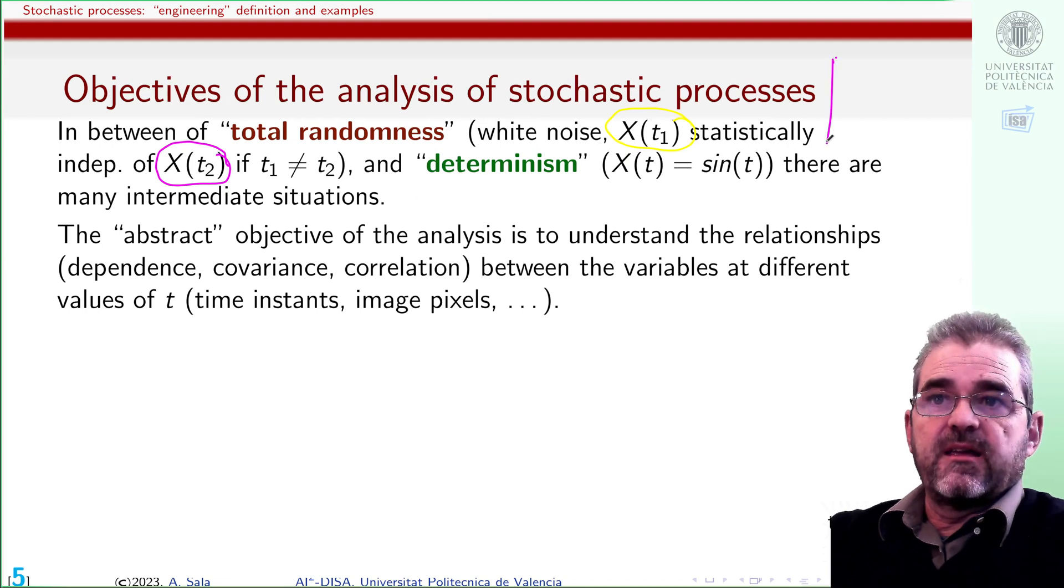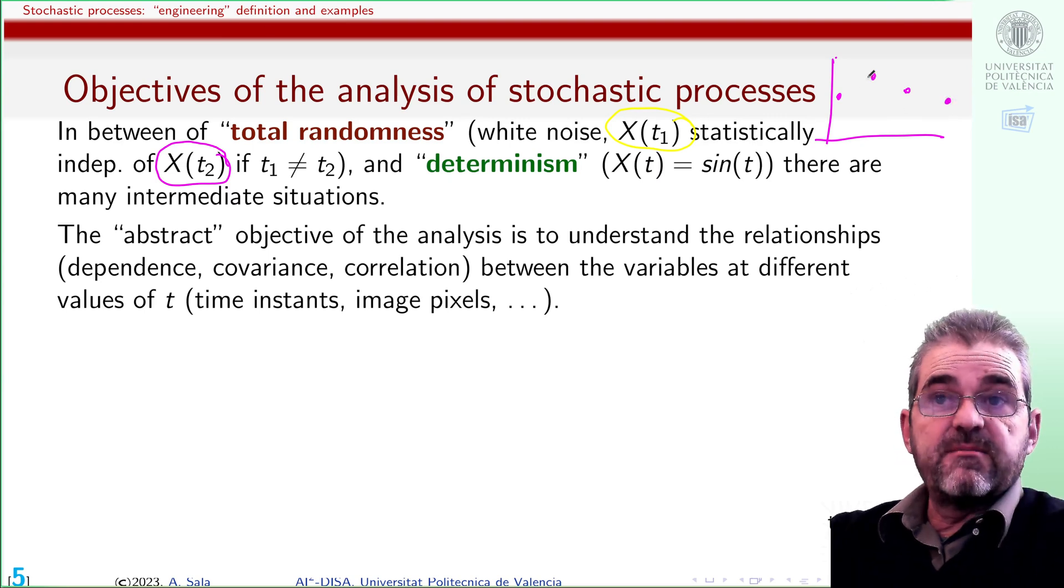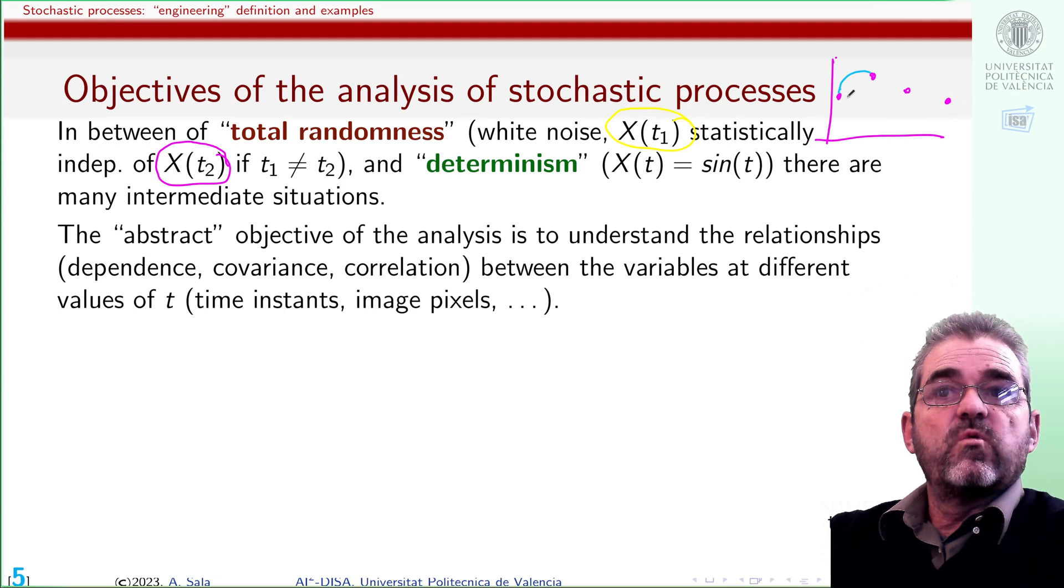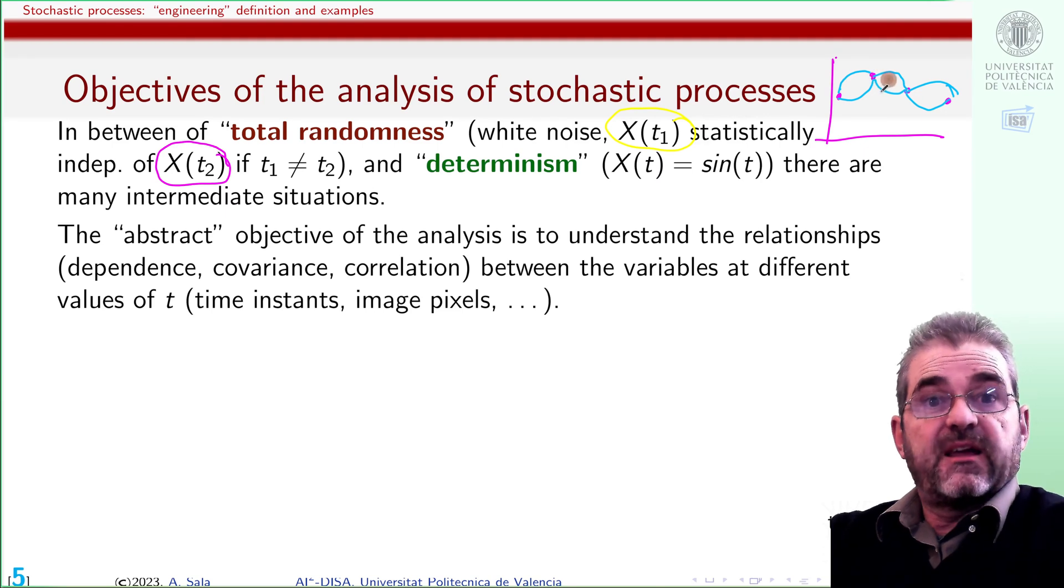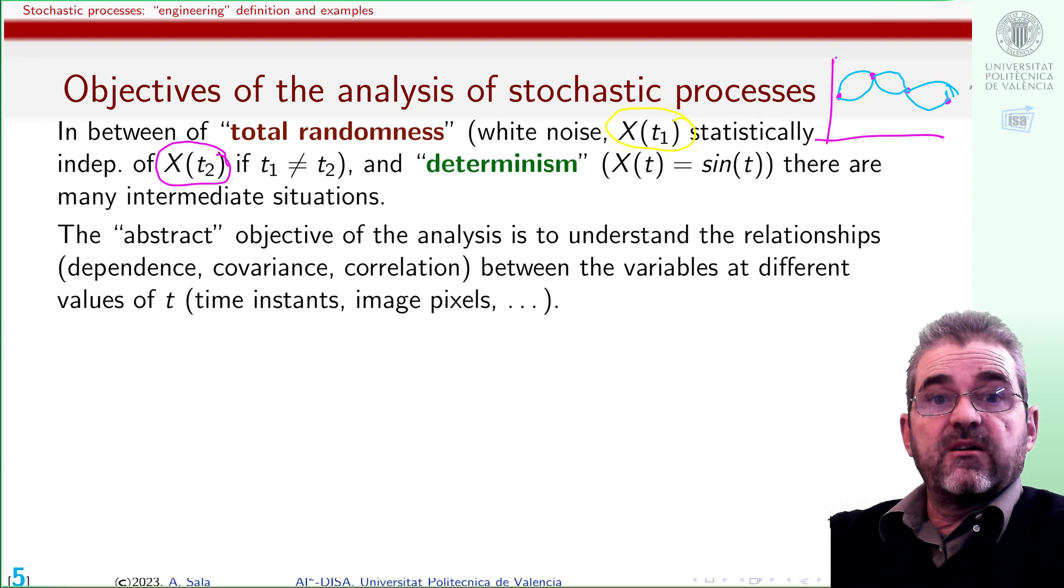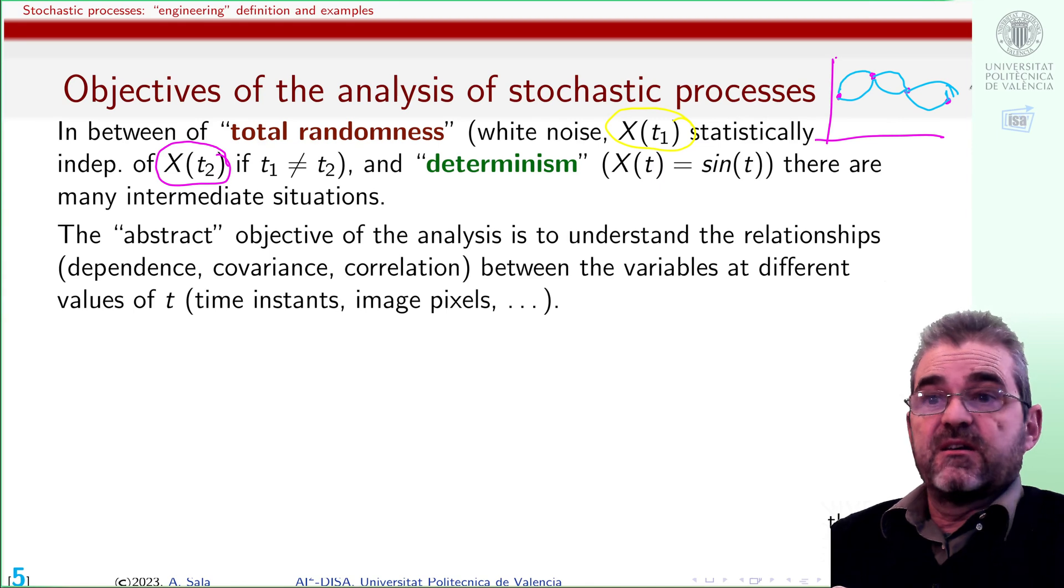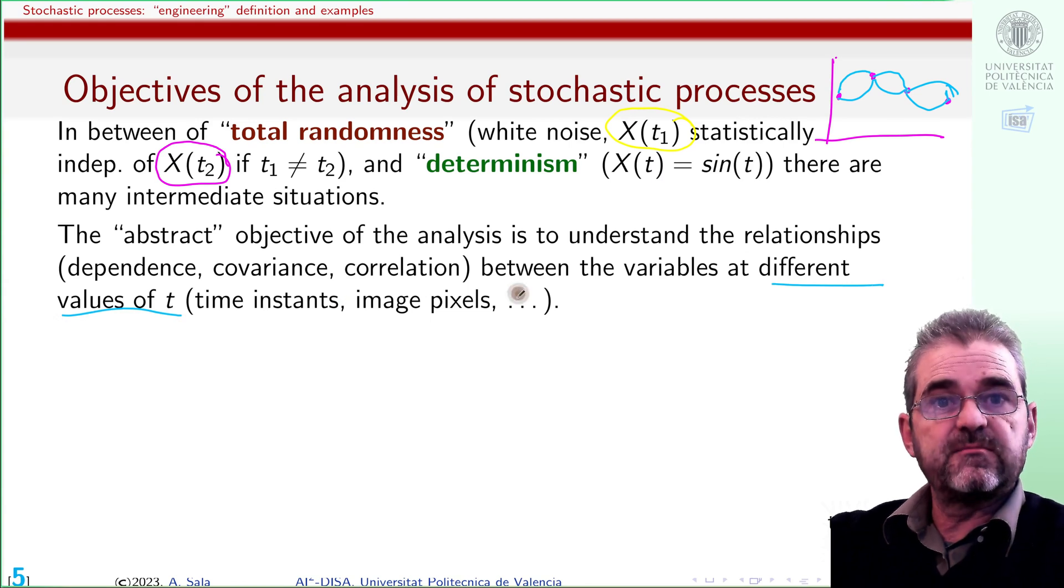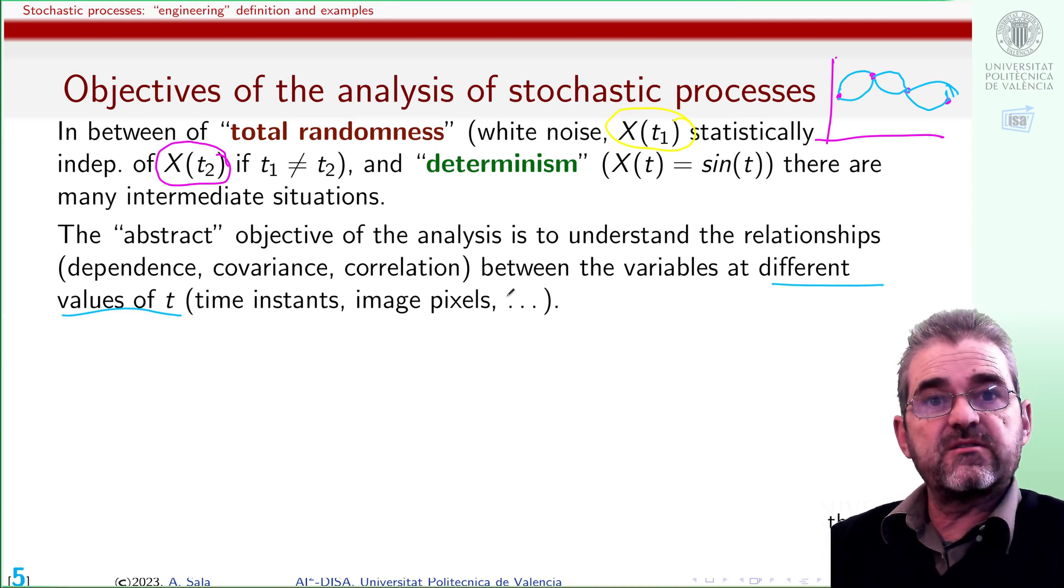But the interest is, of course, in the middle. I may have measurements of temperature every five hours, and I may be able to estimate that the temperature in between will be within some confidence intervals. If I am close to this point and I know the temperature is smooth, then the temperature in one minute will be very close to the one here. I can make some predictions with some confidence intervals. The abstract objective is understanding the relationships between the variables at different values of the index variable, different times, different pixels, understanding those relationships in terms of covariance, statistical dependence or independence, and things like that.